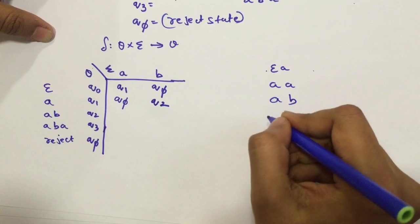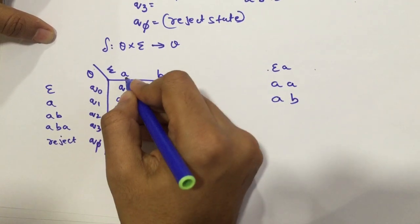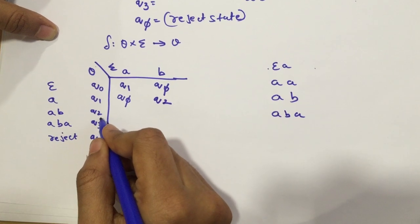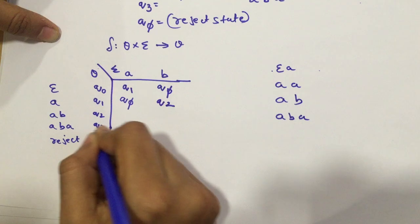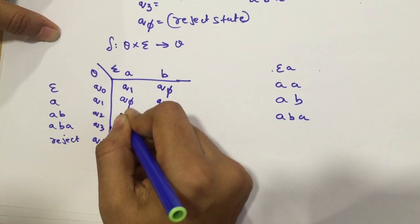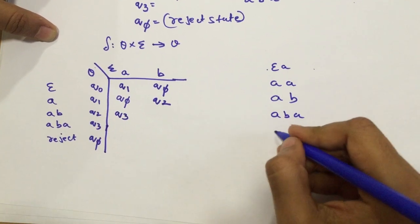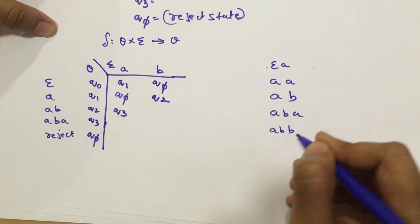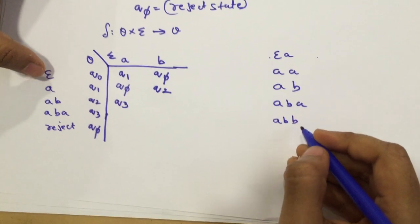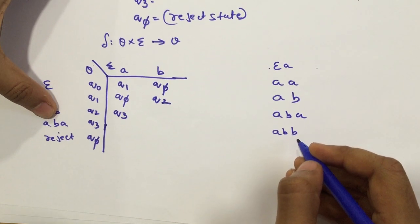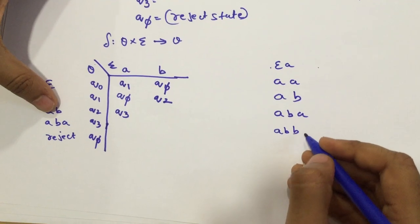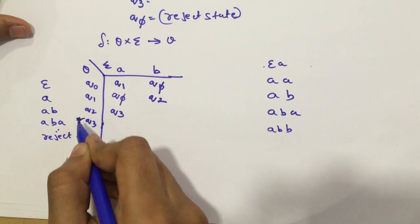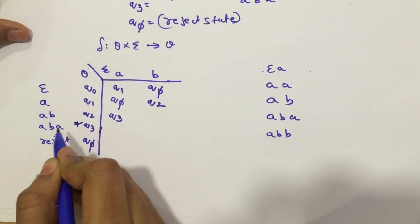Now, let's take Q2, that is AB. Q2 when combined with A, I get ABA. Do I have a state that says I have a string starting with ABA? Yes, I do. So, that state is Q3, since Q3 is starting with ABA. So, I'm going to put Q3 here. Now, let me take Q2 is AB and I have my input alphabet as ABB. So, does my string start with A or AB or ABA? No. So, this goes to the reject state because my string should always start with ABA, this is my final state.